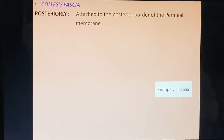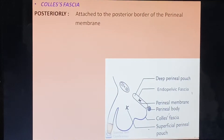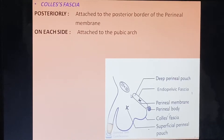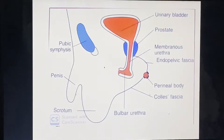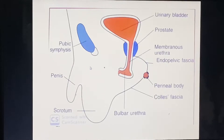Colles' fascia is attached posteriorly to the posterior border of the perineal membrane and on each side to the pubic arch. Anteriorly, it continues with the dartos layer of the scrotum, then with the superficial layer of the penis, and then with Scarpa's fascia of the anterior abdominal wall. The fascia encloses the scrotum region and continues with the fascia of the penis and the anterior abdominal wall.